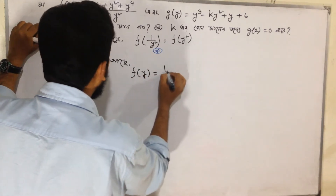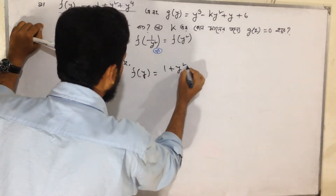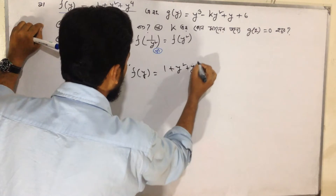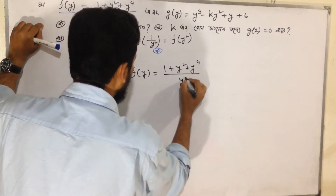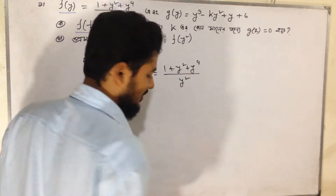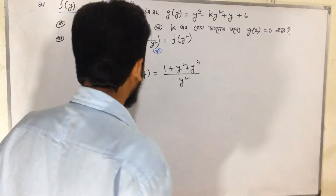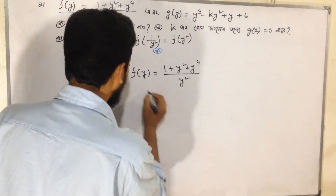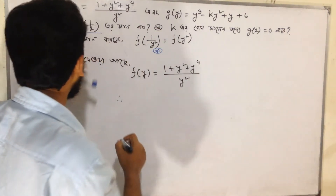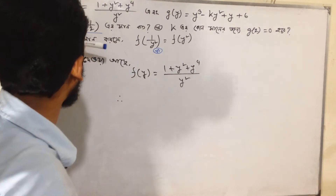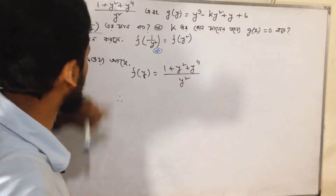f of y equals (1 + y² + y⁴) / y². Now we evaluate the function at y = π/2, that is f(π/2).